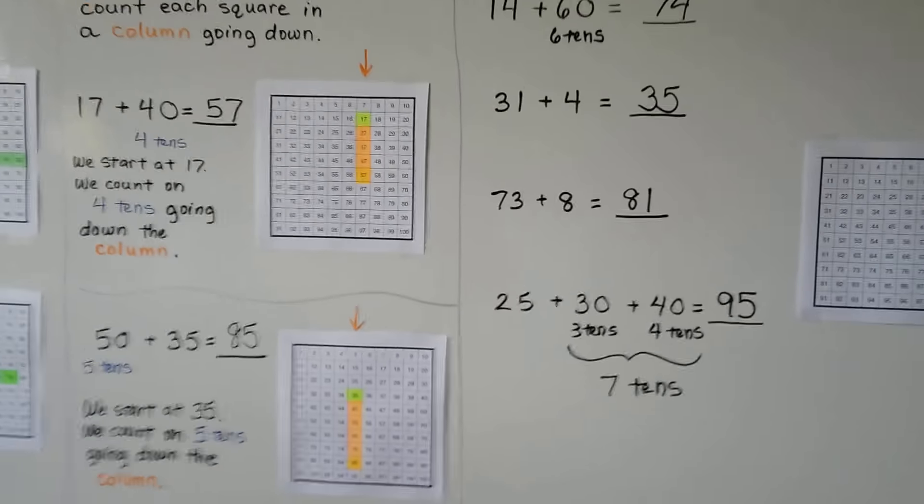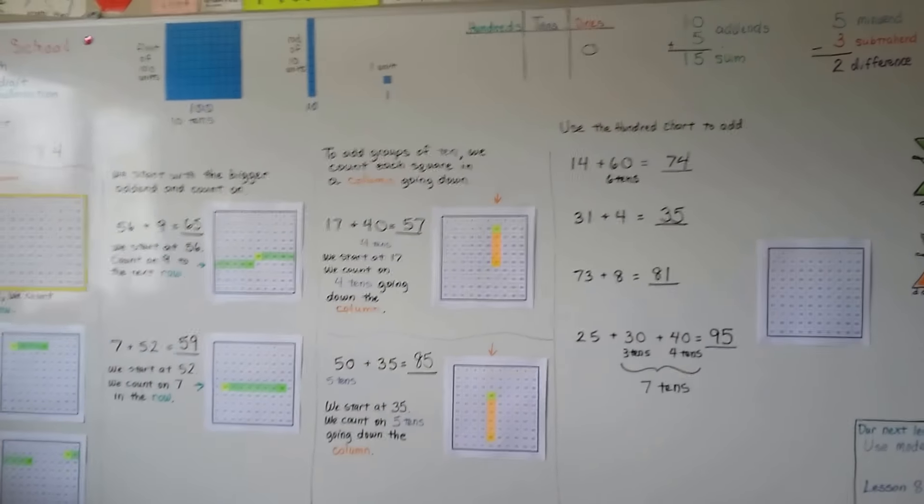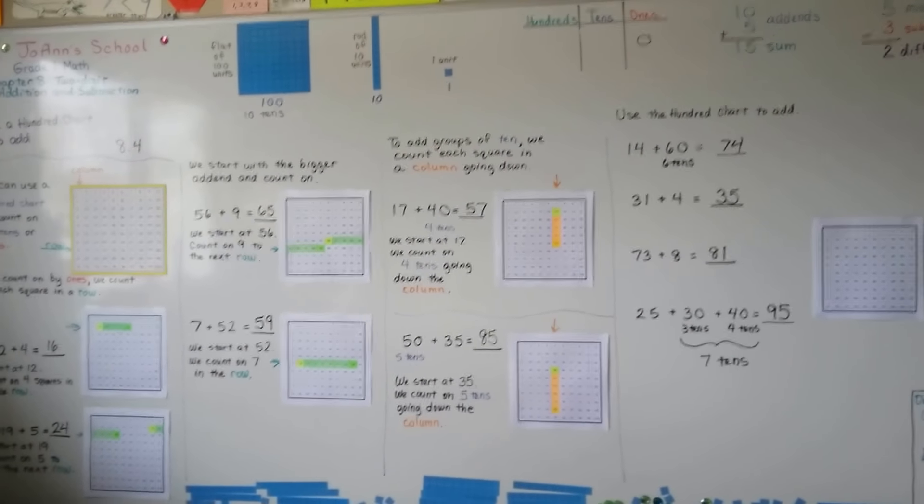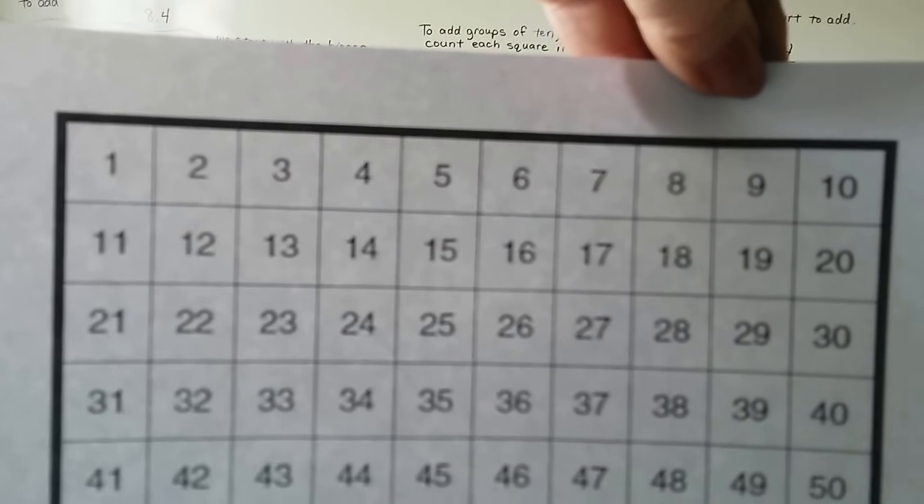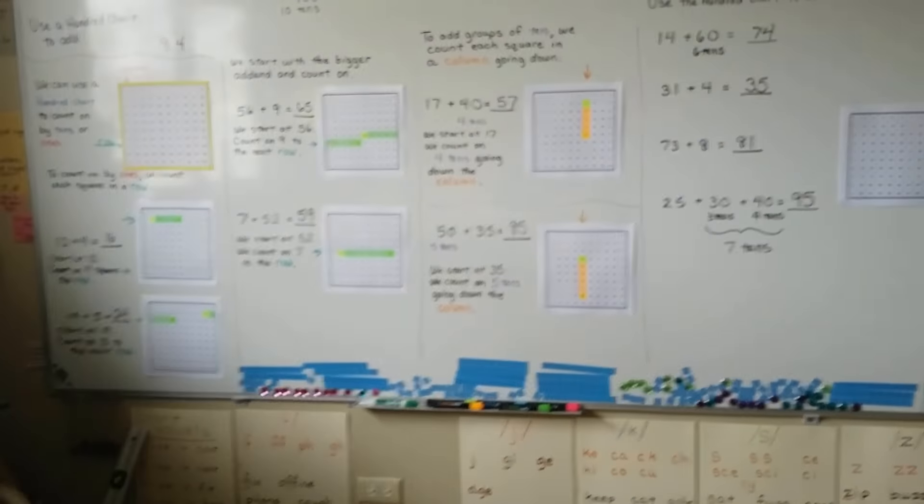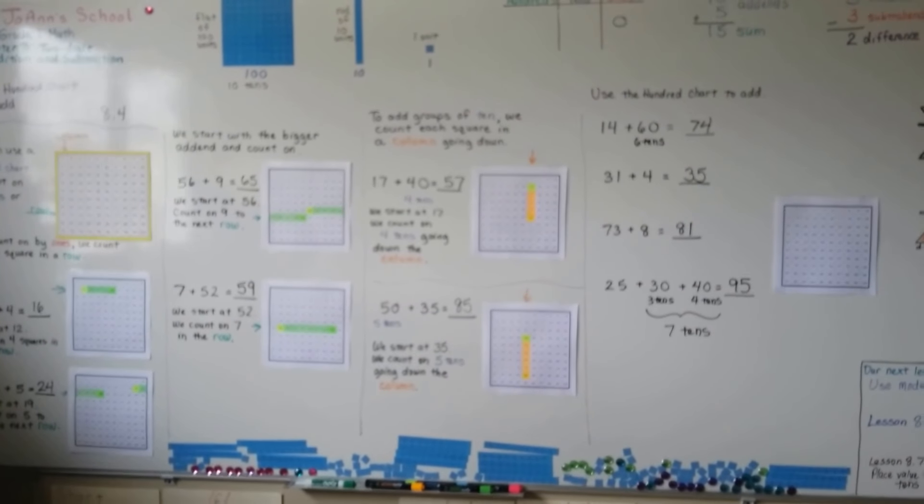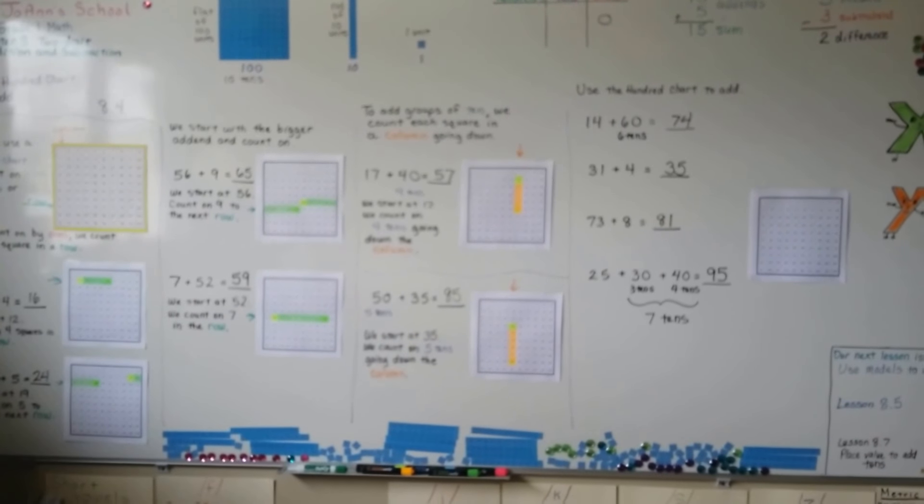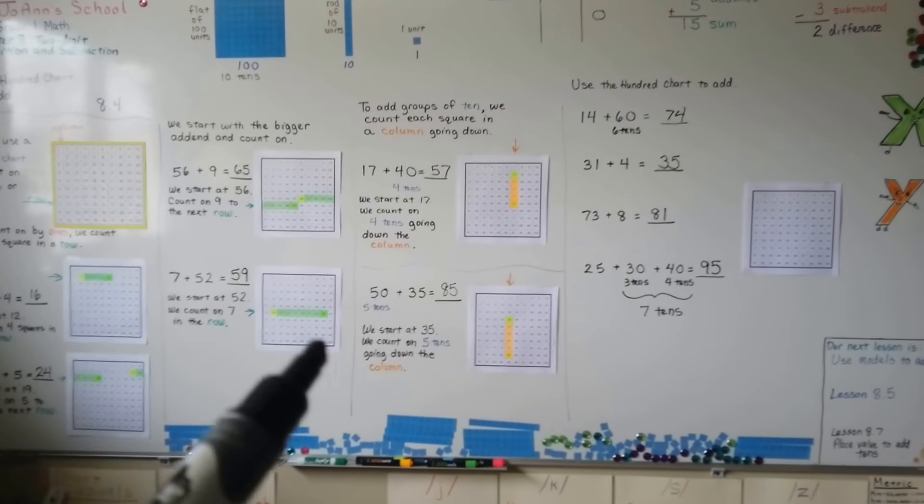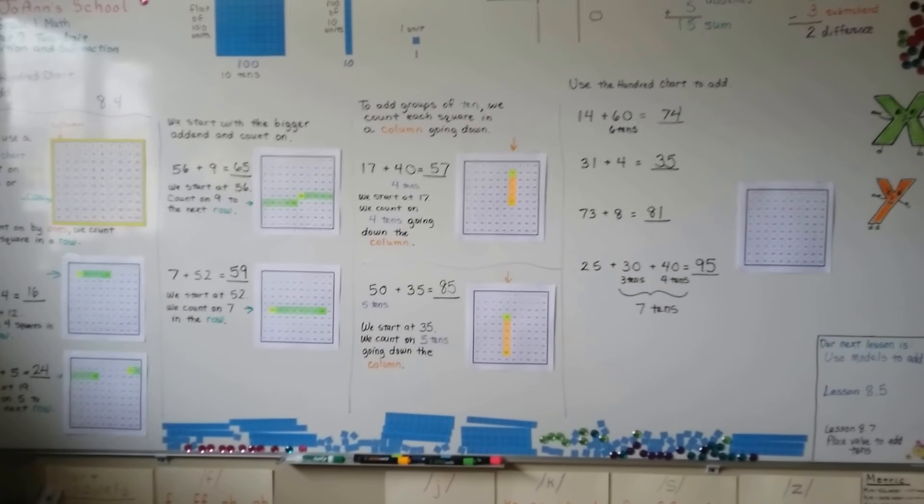You can print a 100 chart from the internet. Just make sure it starts with a 1 and ends with a 100. It should start with a 1 up in the top corner, and it should end with a 100. Some of them start with a 0 and end with a 99. We don't want that kind. Even though that's the kind I really prefer, we need to use this kind, starting at a 1 and ending with a 100, in order to do addition on a 100 chart.